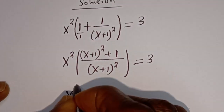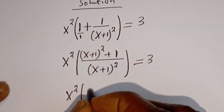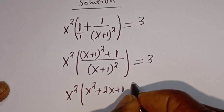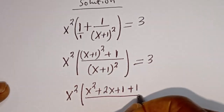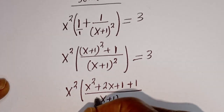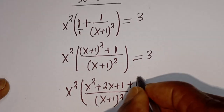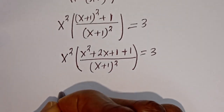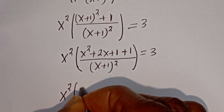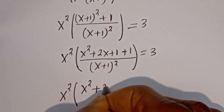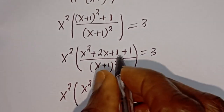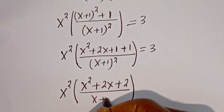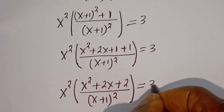Then here we have S squared bracket. We can expand this: (S plus 1) squared is S squared plus 2S plus 1, then plus this 1 divided by (S plus 1) squared, is equal to 3. Now we have S squared bracket: S squared plus 2S plus 1 plus 1 — that is 2 — divided by (S plus 1) squared, is equal to 3.